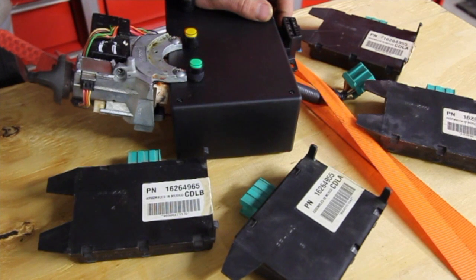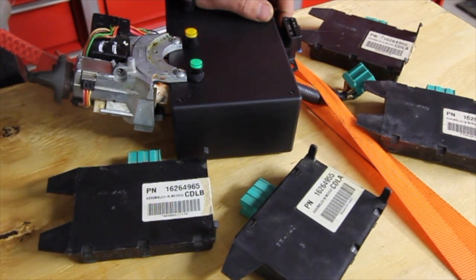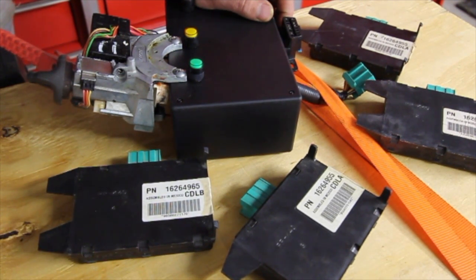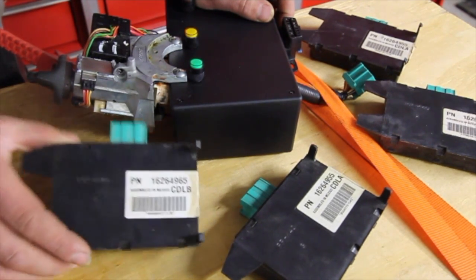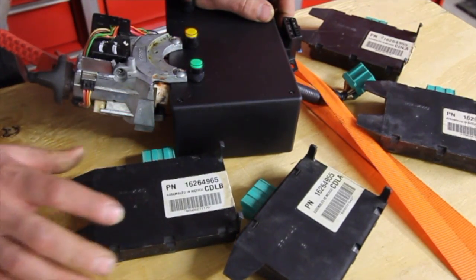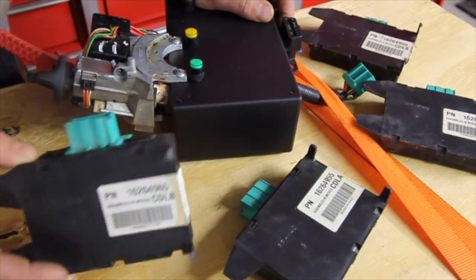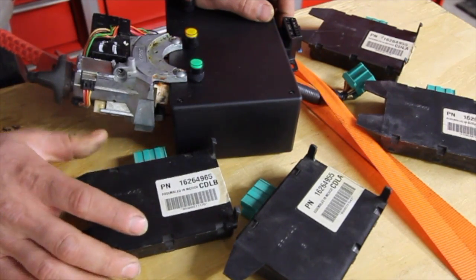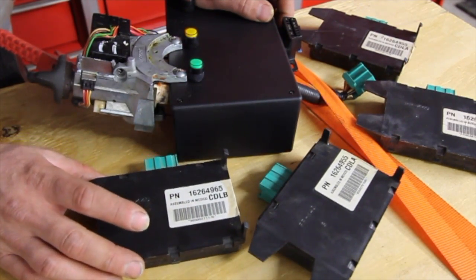98 to 2002 Savannah or Express Van or 01 and 02 three quarter ton or one ton old body style Chevy truck, they're equipped with one of these. These are called the pass lock or anti-theft or VATS or EVO module. There's several names that these are called by.